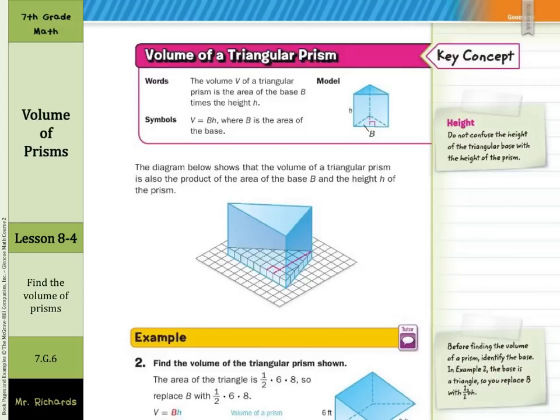This note here is important. Do not confuse the height of the triangular base here, this red dashed line, with the height of the prism. Both are lowercase h's, so you do need to be careful to make sure you're using the correct ones.